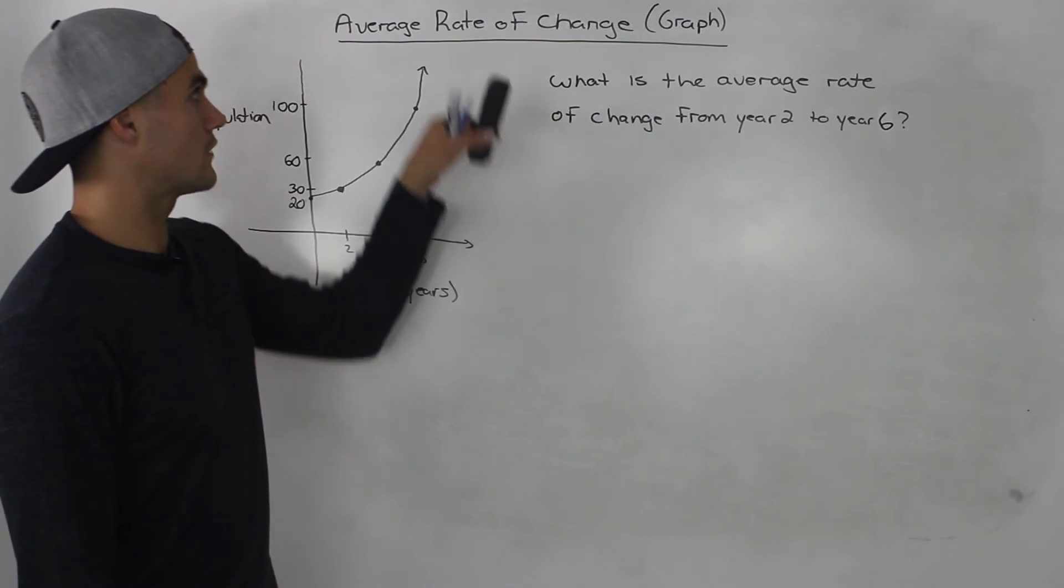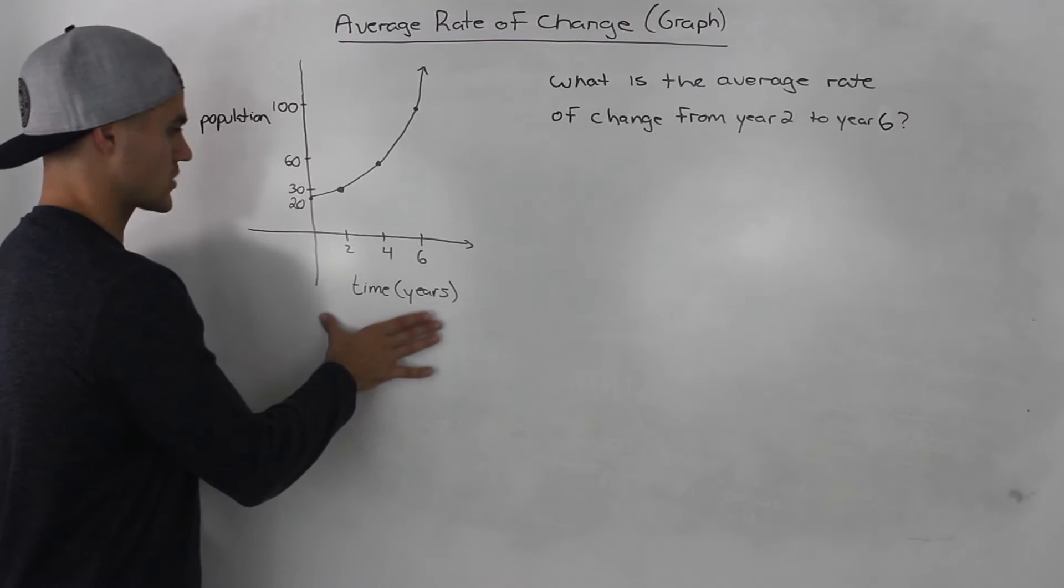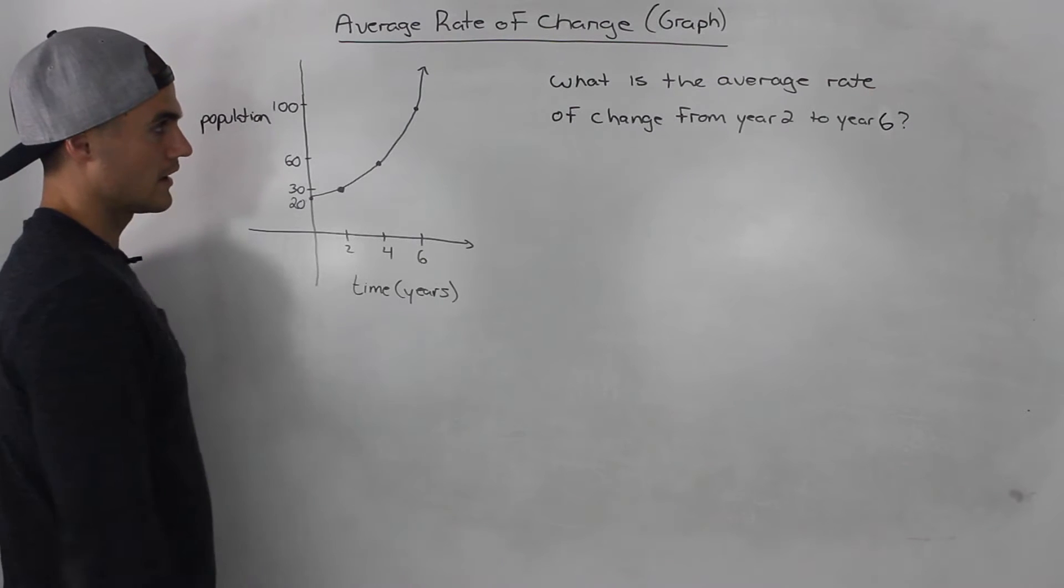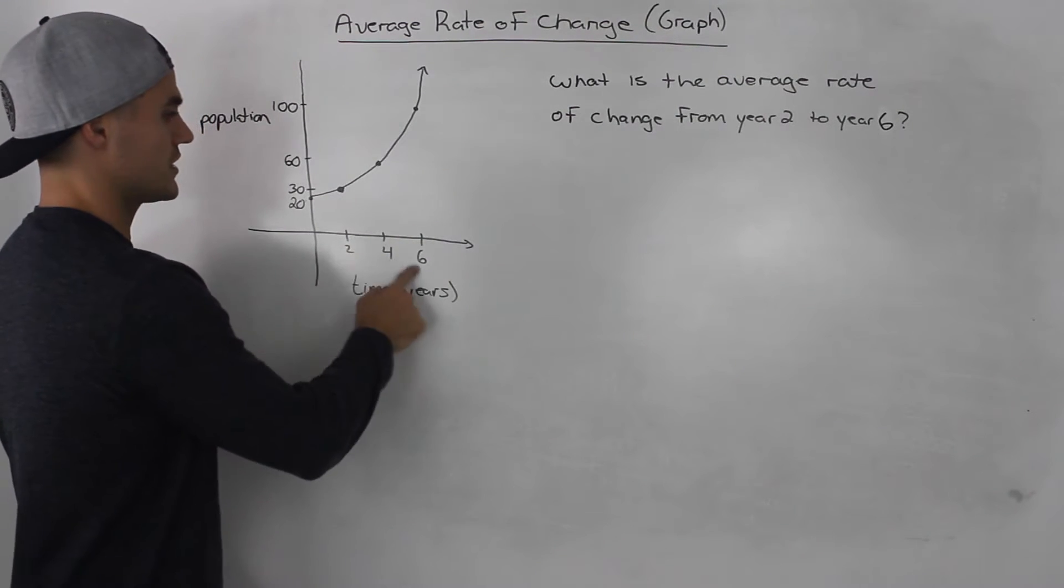Now in this video we're going to talk about how to find the average rate of change from a graph. So we're given this graph here that's modeling the population after a certain amount of years, and they're asking what is the average rate of change from year 2 to year 6.